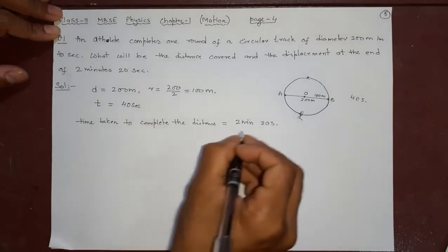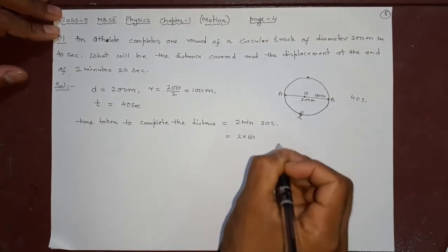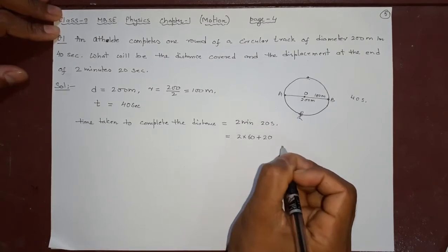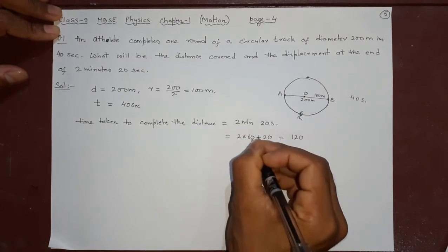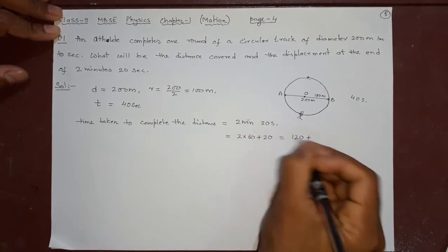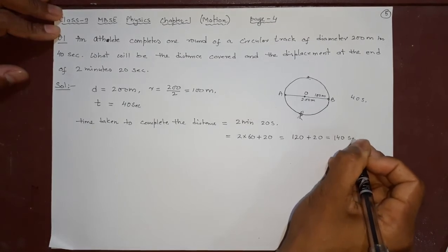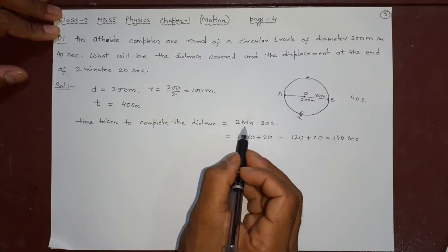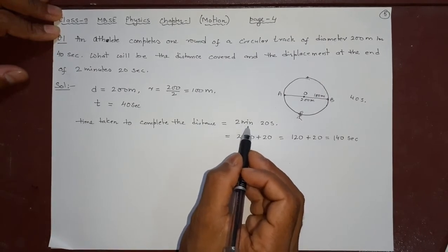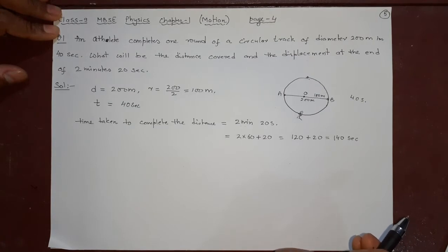That means 2 minutes is 2 into 60 seconds plus 20 seconds. So what is this altogether? 120 plus 20, it will be 140. The meaning is 2 minutes and 20 seconds is 140 seconds. Why did I do this? Because we want to write in the same unit, second unit, 140 seconds.